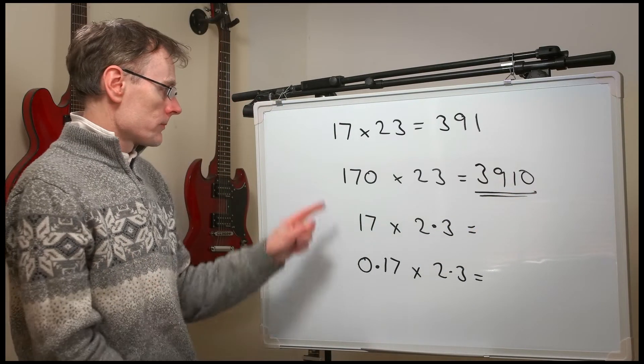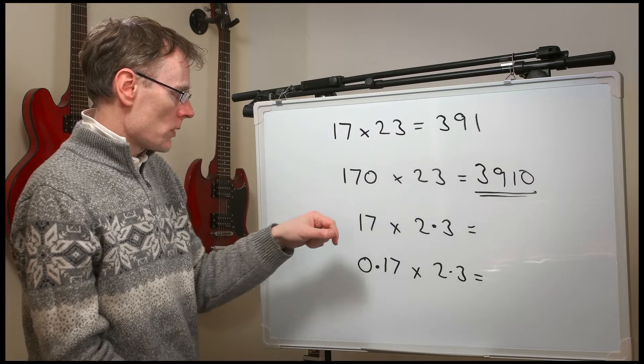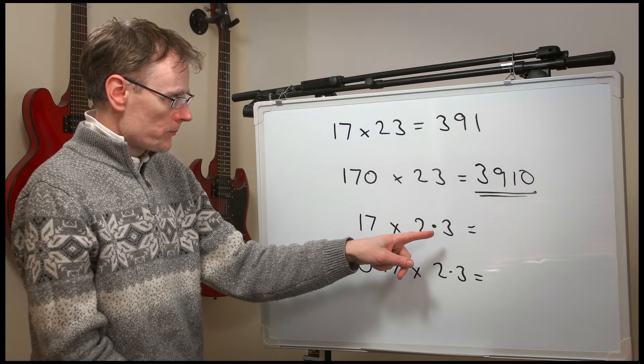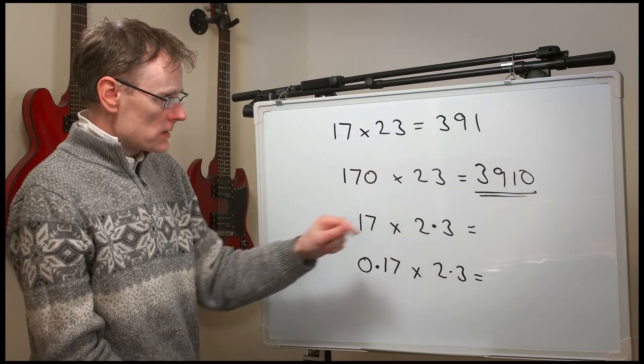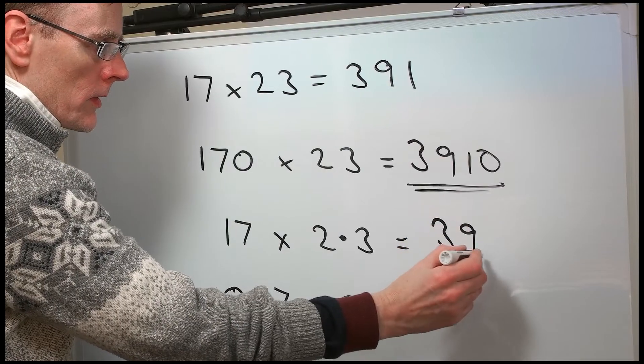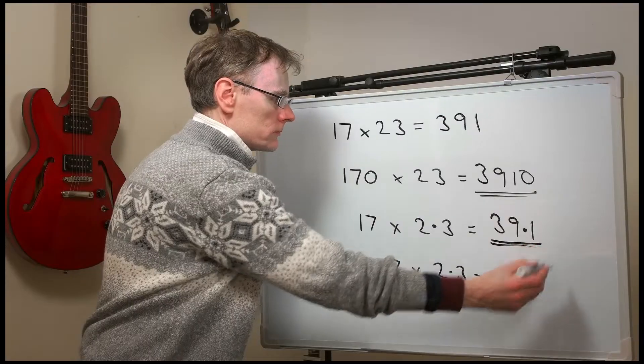Now, look at the second one. 17 times 23 is 391. What's 17 times 2.3? Well, this one is 10 times smaller than 391. Divided by 10, you get 39.1.